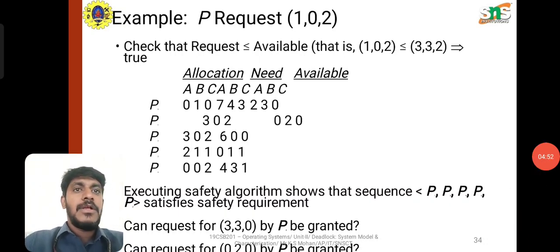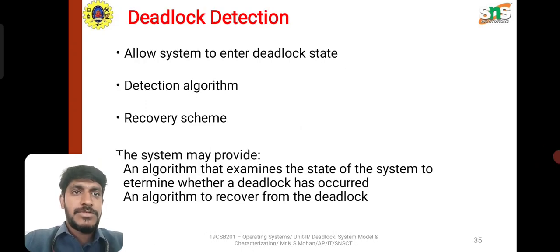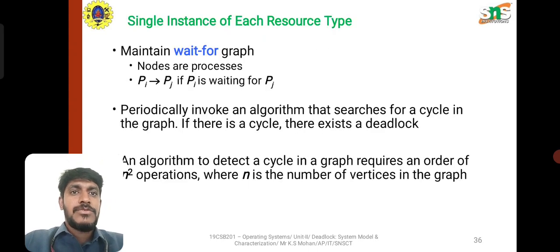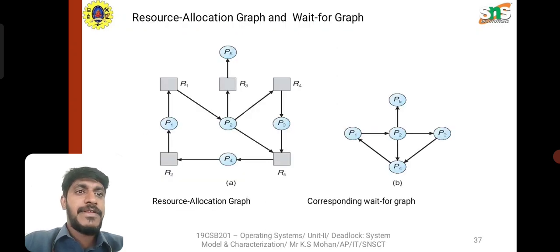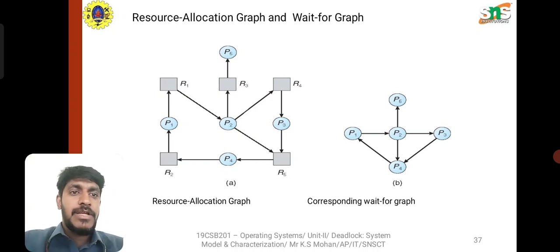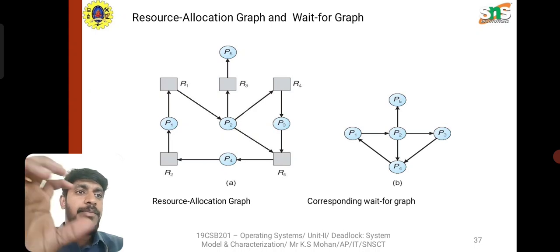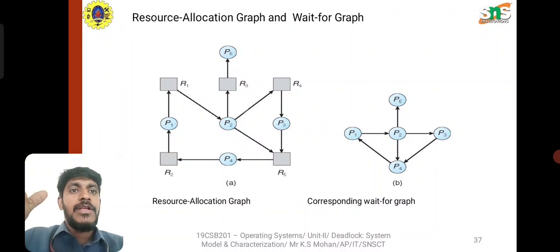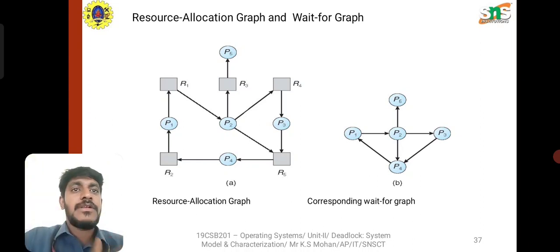Deadlock detection allows the system to enter deadlock states, then uses a detection algorithm and a recovery scheme. For single instances of each resource type, we use the Resource Allocation Graph and a wait-for graph. Resources R1 through R5 are shown, and processes P1 through P5 are resource-allocated in the corresponding graph. The wait-for graph is derived from the resource allocation graph.